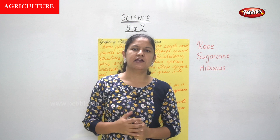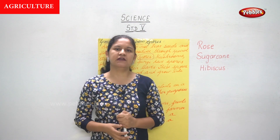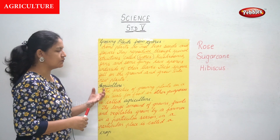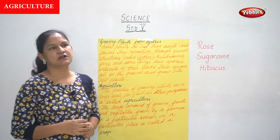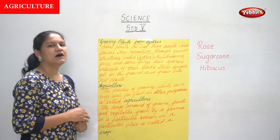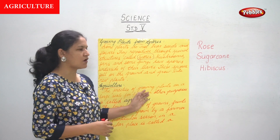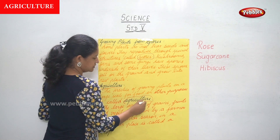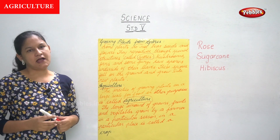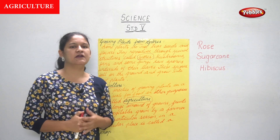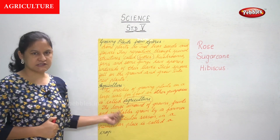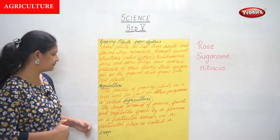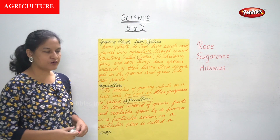Talking about agriculture — what do we mean by agriculture? The practice of growing plants on a large scale for food or other purposes is called agriculture. This is the definition for agriculture.